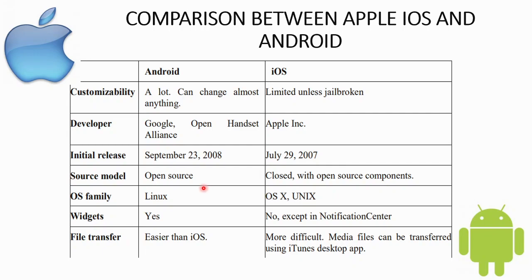The operating system families are unique to each platform. iOS is related to macOS — Apple's desktop OS — as a mobile version of that family, designed for iPhones and other Apple mobile devices.